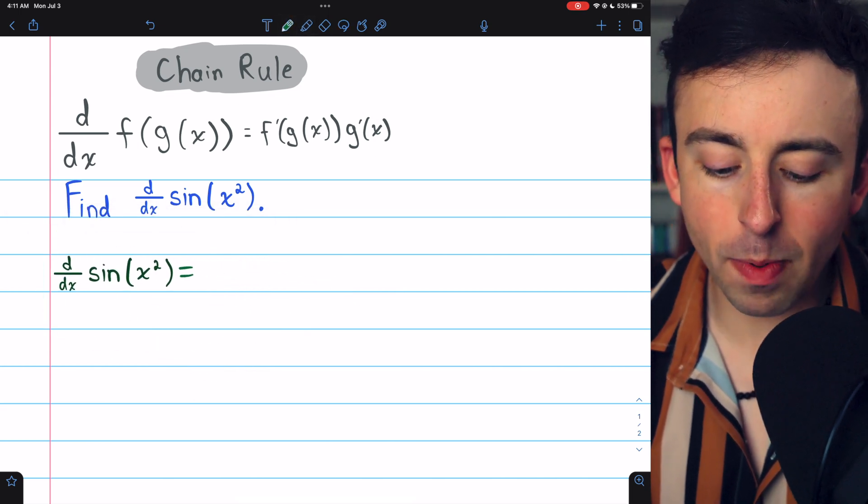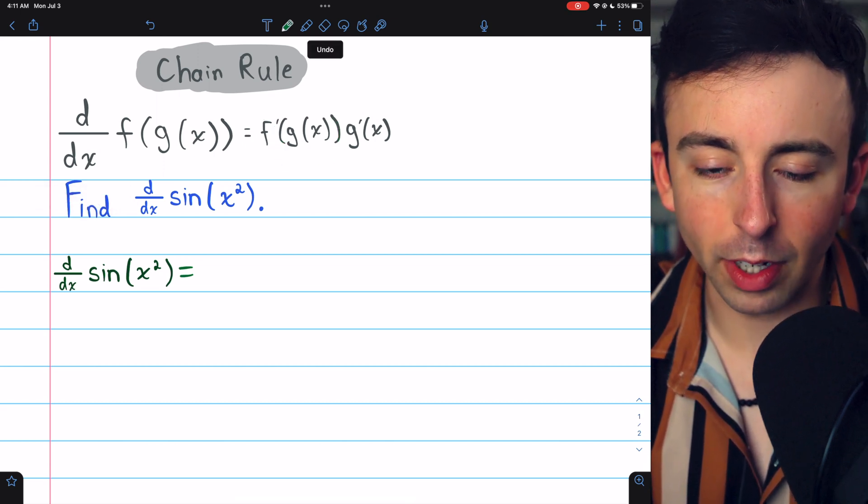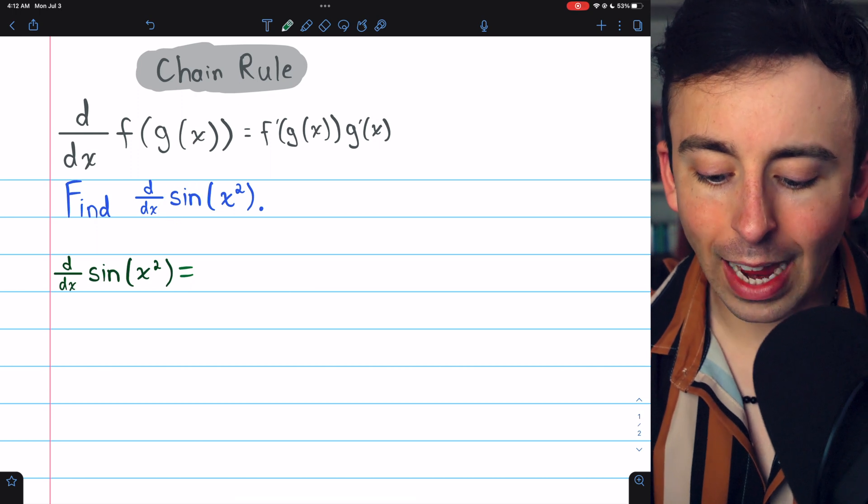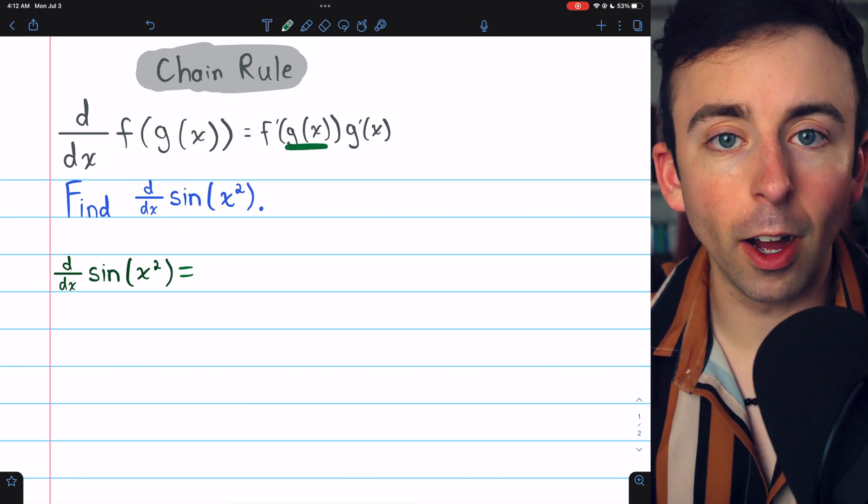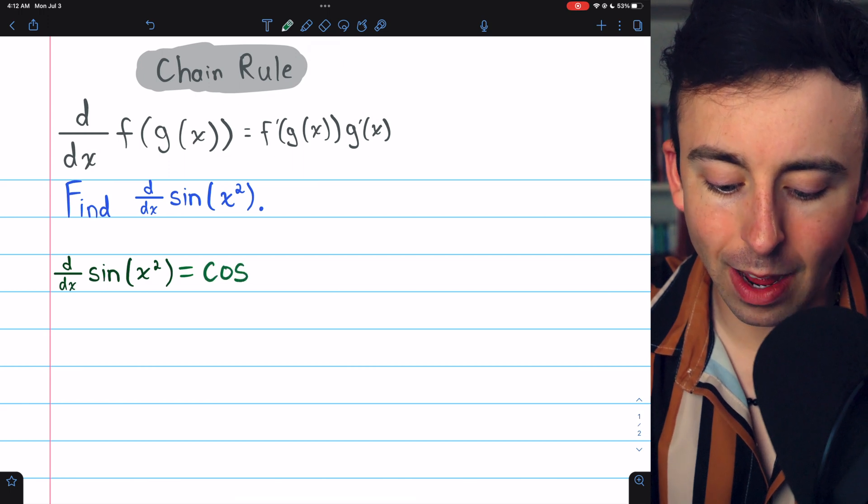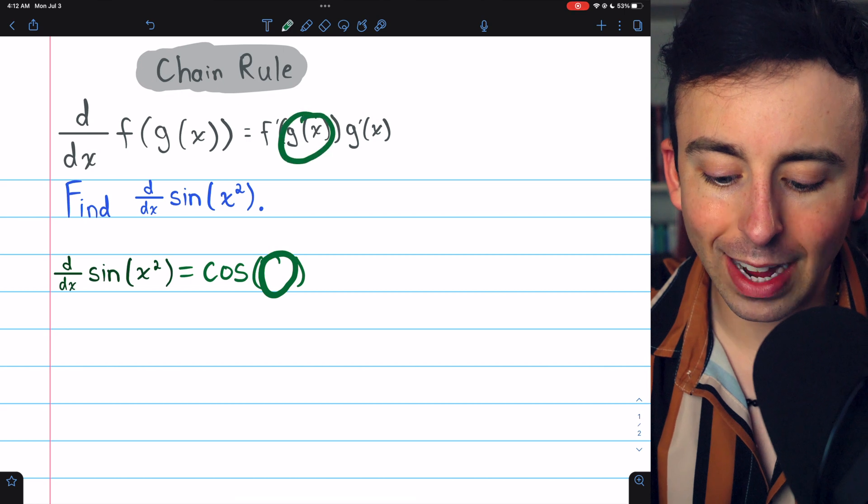Let's try using the formula. We begin with f prime of g of x, so take the derivative of the outside function, in this case that's sine, and leave the inside function unchanged. The outside function is sine, so the derivative of that is cosine, and then leave the inside function, the g of x, unchanged.